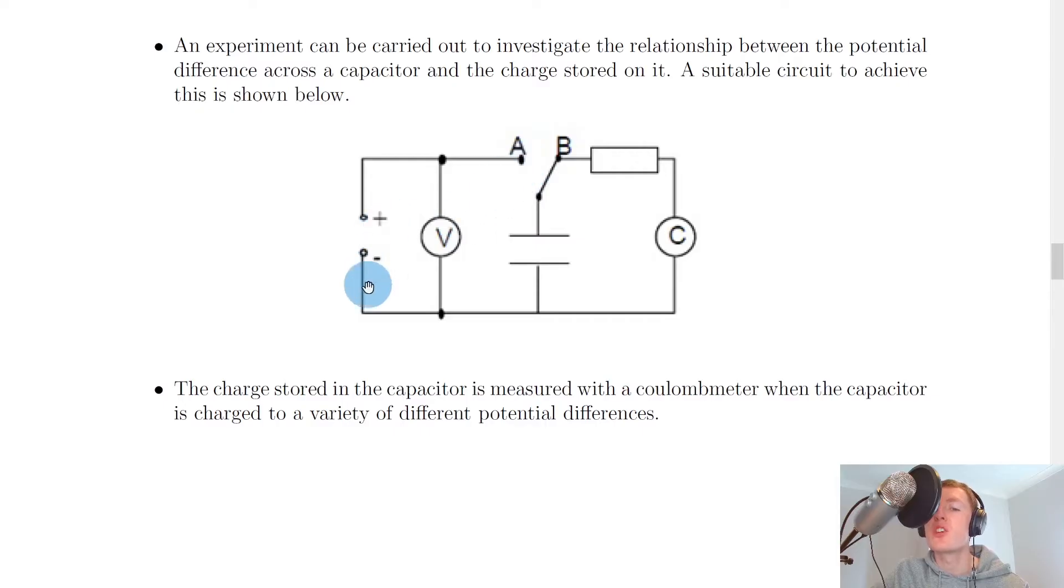So when the switch is set to A we can charge up the capacitor because the electrons will flow from negative round here onto the capacitor plates, and then we can discharge the capacitor by moving the switch to part B where we no longer have the capacitor connected to the battery, but the capacitor can discharge where it loses its charge and the coulomb meter can tell us what this charge is.